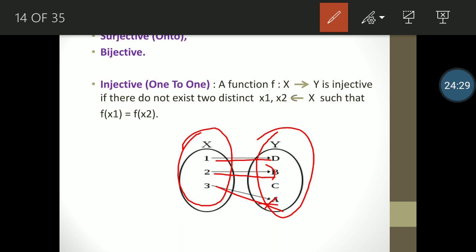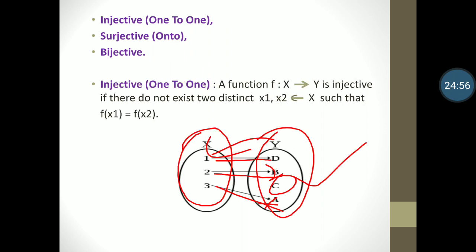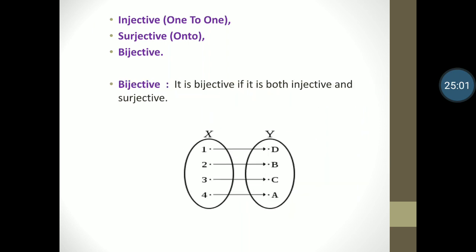In a surjective function, all elements of Y are in relation — for example 3 and 4 are both in a common relation with c. In injective, all elements of X are in relation with Y but some Y elements may not be covered. In bijective, the function is both injective and surjective — all elements of X are in relation with all elements of Y, and no element is repeated. So in the next lecture we will study about matrices. Thank you, students.